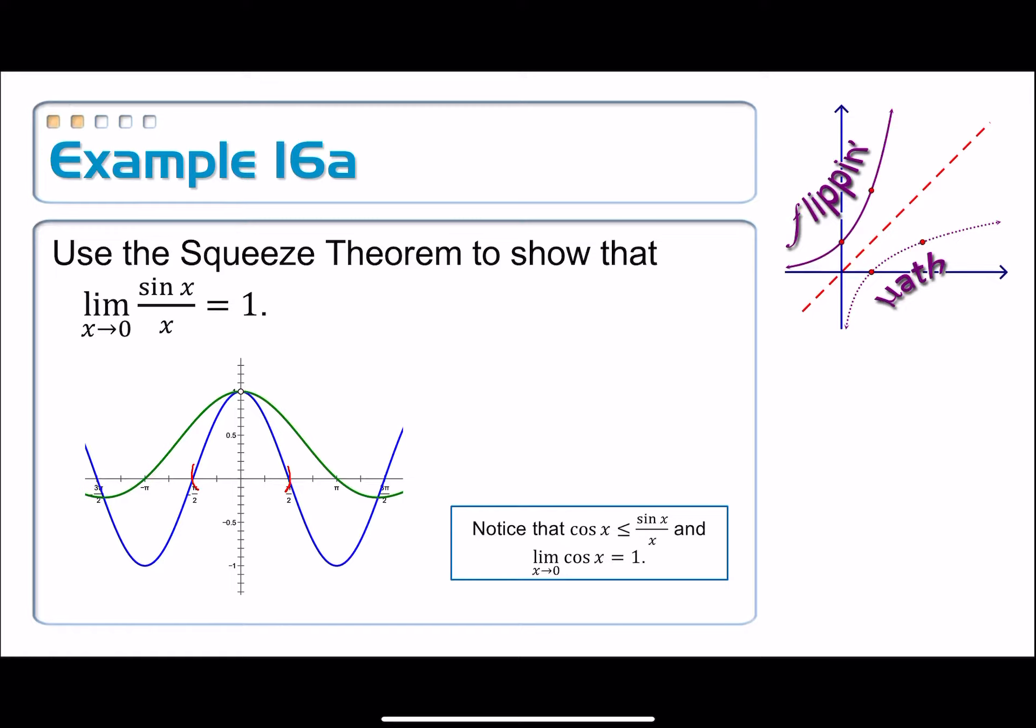Now we need the top part. We need a function that is greater than or equal to the green one and then meets that 1. And again, there's lots of things that we can pick. We're going to pick something super easy. Y equals 1, right?